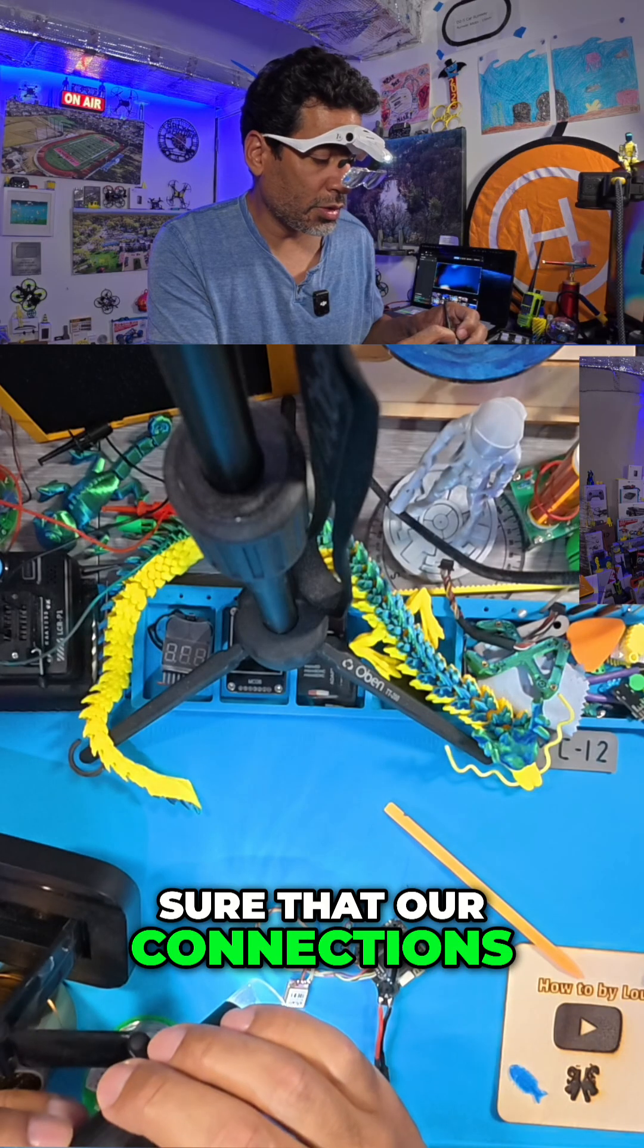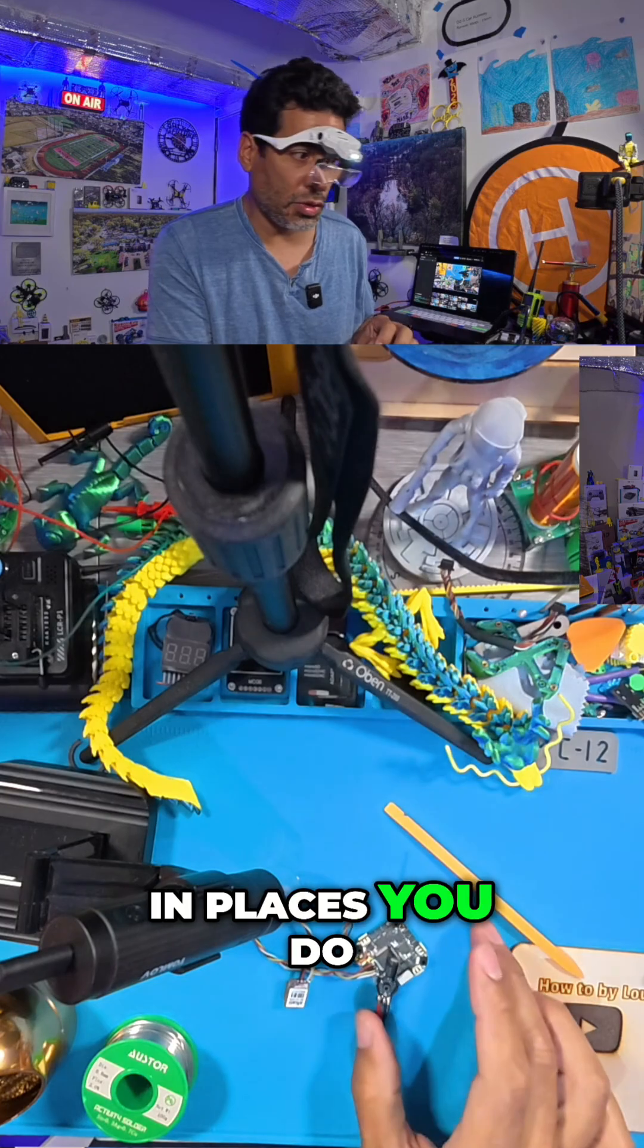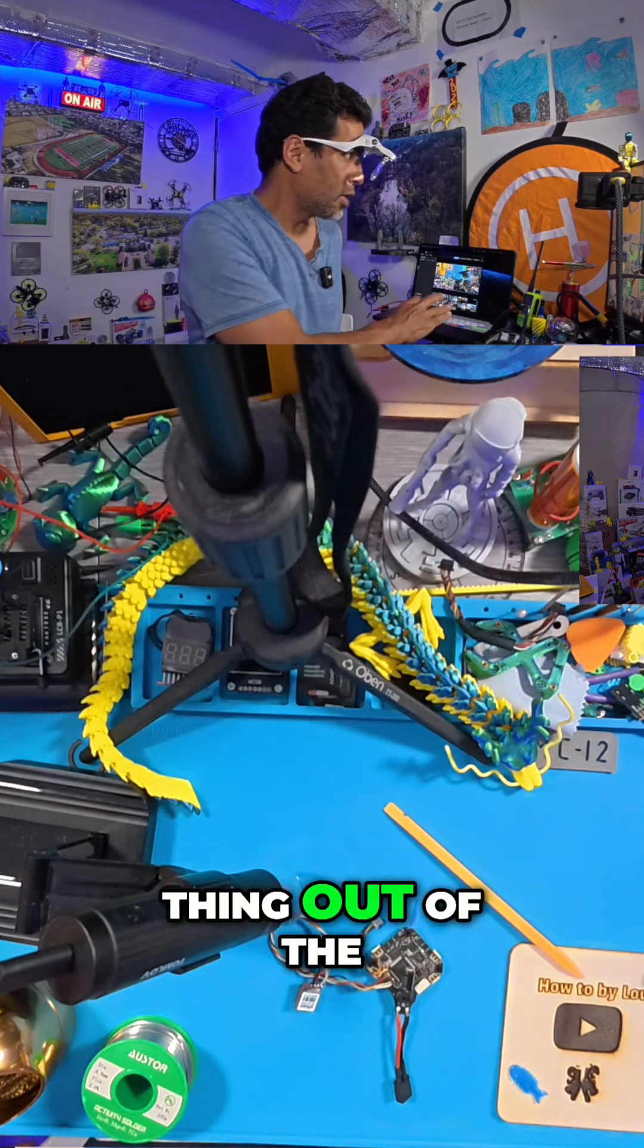I want to make sure that our connections aren't bridged. Bridge means that you've got solder in places you do not want them to be. Let me get this thing out of the way so we don't have like a big screen with bright lights.